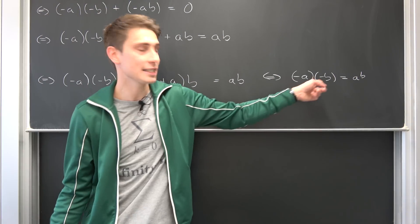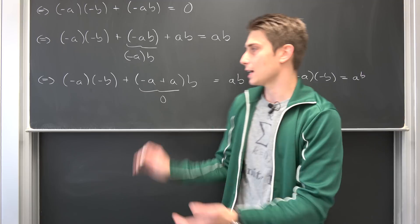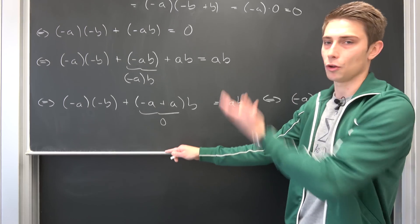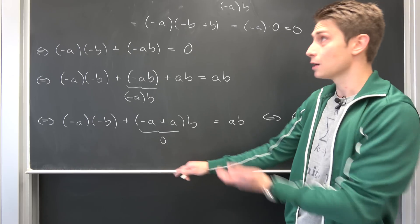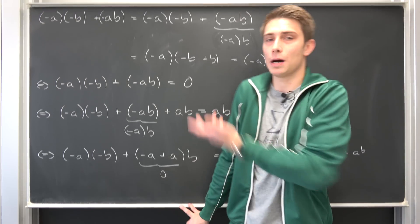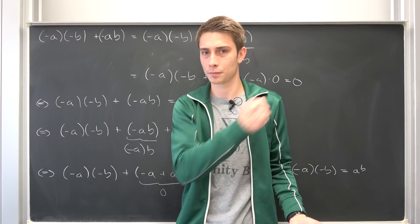And then we are done. Negative times negative is positive. And you don't have to take a look at all the cases — we have shown this for random arbitrary A and B's out of the field.